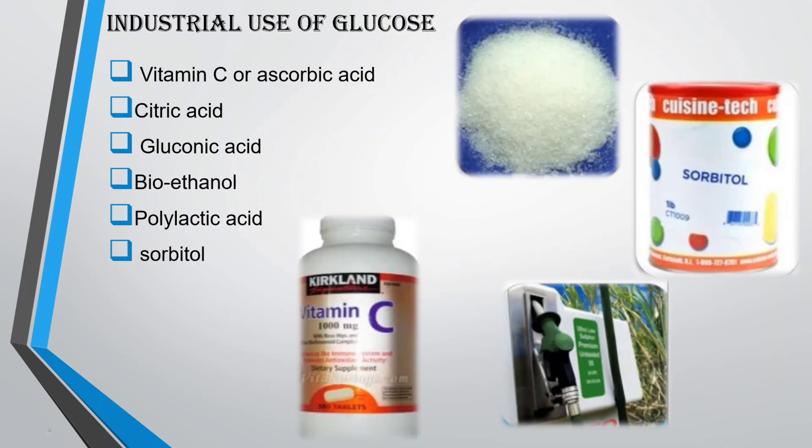Industrial uses of glucose include the production of vitamin C (ascorbic acid), citric acid, gluconic acid, bioethanol, polylactic acid, and sorbitol.